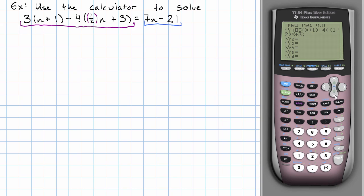And then the expression on the right, remembering again to the calculator, every variable is x. 7x minus 21. Now we hit second graph.